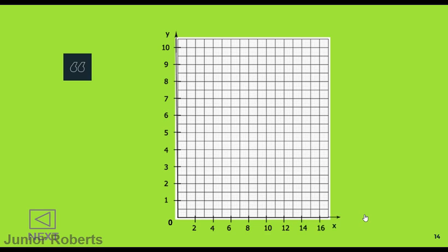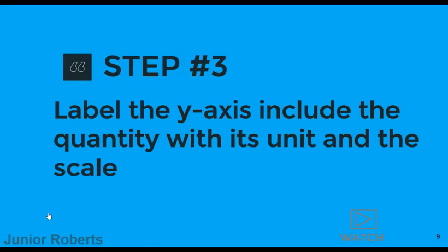For each axis I've labeled them — this is our x-axis and this is our y-axis — which is important when we plot a graph. I've also chosen a scale: for the y-axis a scale of two centimeters equals one unit, since each box is one centimeter. For the x-axis the scale is two centimeters equal two units.